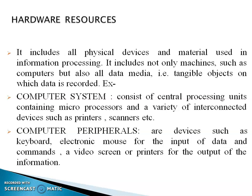Next comes hardware resources. Hardware resources are nothing but the physical devices being used in information processing — the physical things you are going to have for any kind of system. Such as computers, and also data media. Data media means where you are going to store your entire data. A simple example is tangible objects on which data is recorded, like your pen drive, your hard disk, or any other devices where you store your data — those also come under hardware resources.